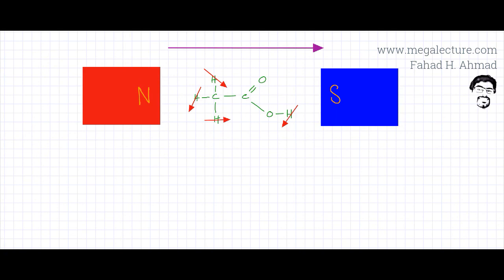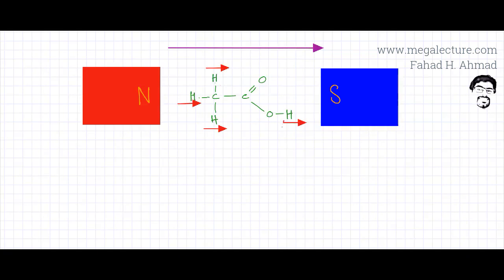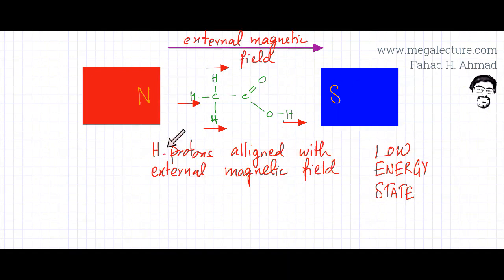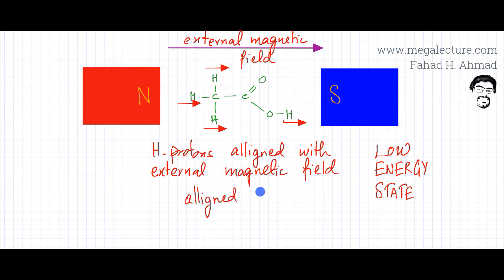Once placed in the external magnetic field, all the hydrogen protons start pointing in the direction of that field — from north to south. If the hydrogen protons are aligned with the external magnetic field, this is called the low-energy state. The protons by default align with the external magnetic field, and this is referred to as the aligned spin.